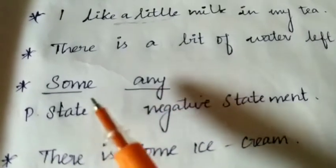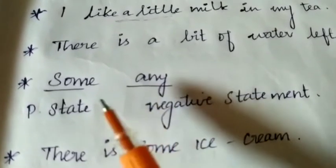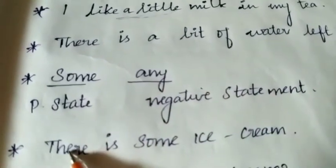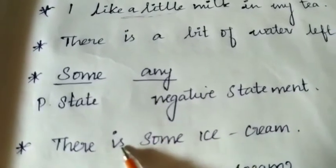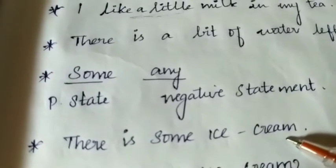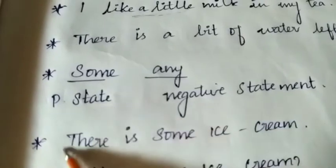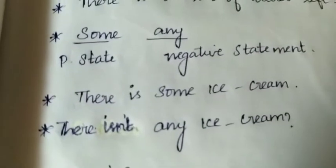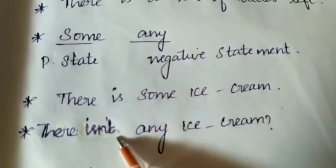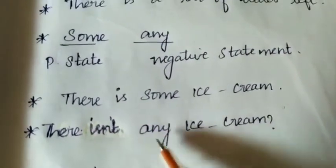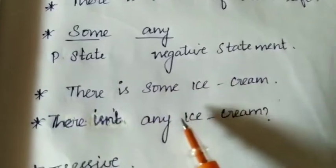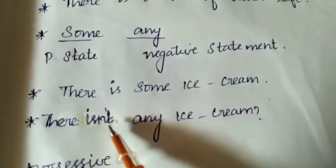'Some' and 'any' are also keywords for quantifiers. We use 'some' for positive statements and 'any' for negative statements. For example: 'There is some ice cream' — positive statement. 'Any' can be used for both countable and uncountable but only in negative statements: 'There isn't any ice cream' — negative statement.